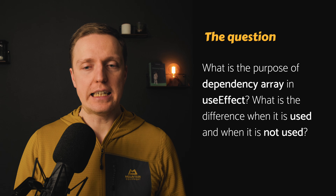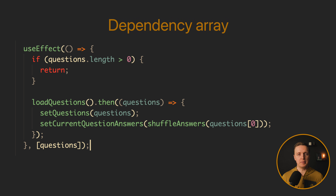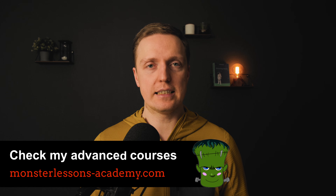What is the purpose of the dependency array in useEffect? What is the difference when it is used and when it is not used? The dependency array is exactly an array of the dependencies of our useEffect. If we don't provide it, useEffect will be executed after every single render. If you provide an empty array, it will be executed only once after the first render. The good approach is to write inside this array all variables of your component that you are using inside useEffect, so it will be triggered only when these variables change. If you don't provide the dependencies, your component may become stale and render old information.